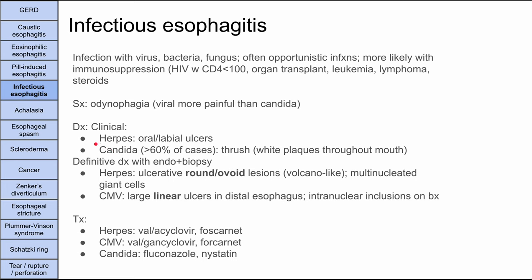For herpes esophagitis, patients may also have oral or labial ulcers — the classic dew drops on a rose petal appearance. In candida, at least 60% of cases also have thrush (white plaques in the mouth). On endoscopy, herpes shows ulcerative round ovoid volcano-like lesions, and biopsy reveals multinucleated giant cells. CMV shows large linear ulcers in the distal esophagus, with intranuclear inclusions on biopsy. Treatment: herpes gets valacyclovir or acyclovir (foscarnet if resistant); CMV gets valganciclovir or ganciclovir (foscarnet if resistant); candida gets fluconazole or nystatin.